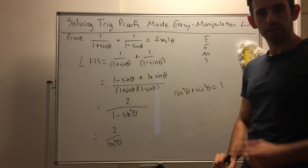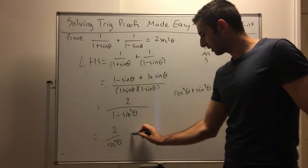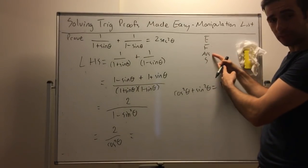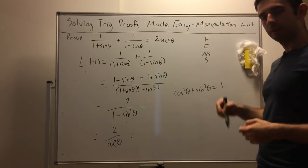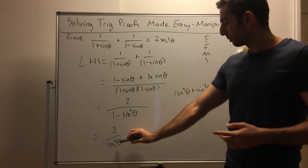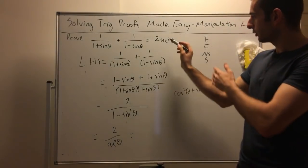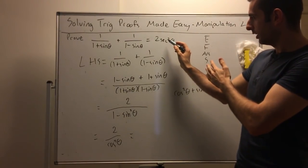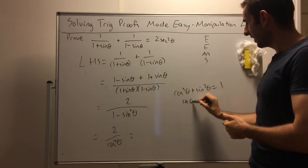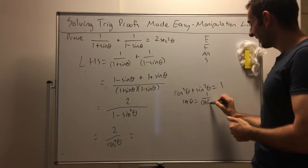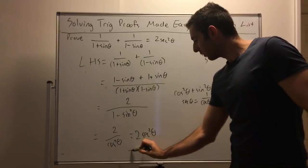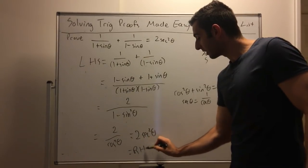What identity do I use? Since cos²θ + sin²θ = 1, rearranging gives 1 − sin²θ = cos²θ. So the denominator becomes cos²θ, and the expression is 2/cos²θ. Going through the list one more time we're left with substituting an identity again. Since secθ = 1/cosθ, we have 2/cos²θ = 2sec²θ, which equals the right-hand side.